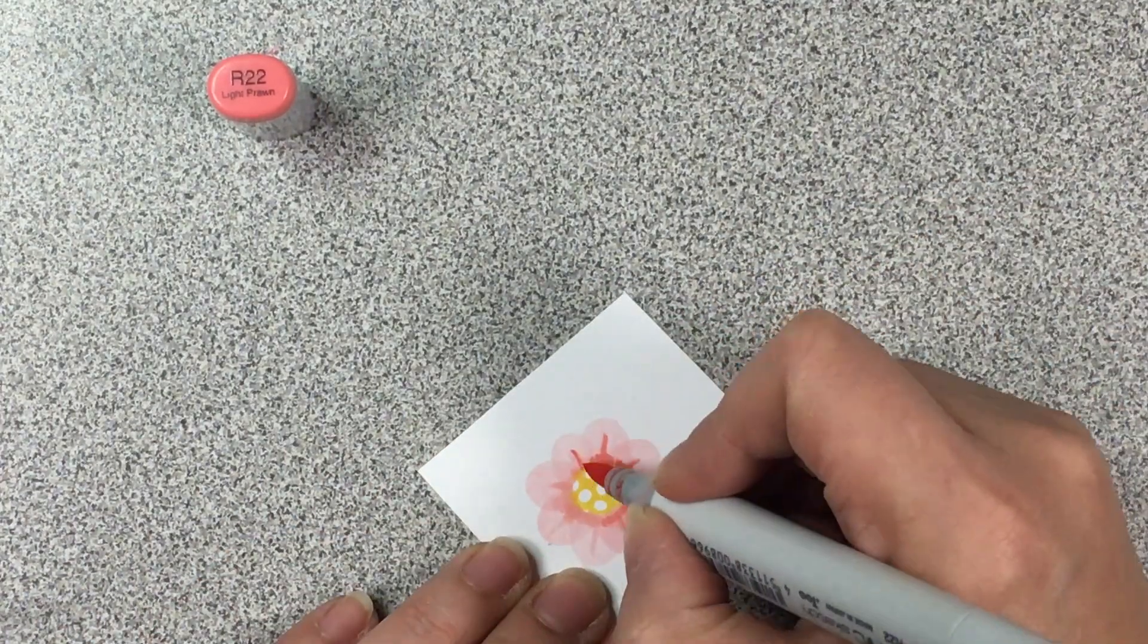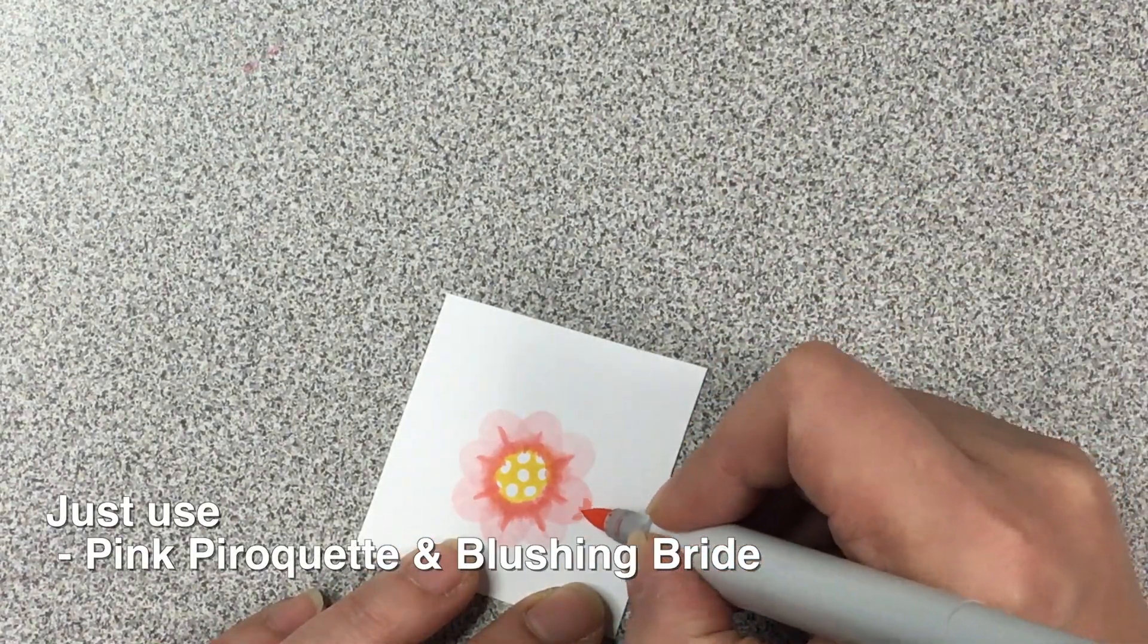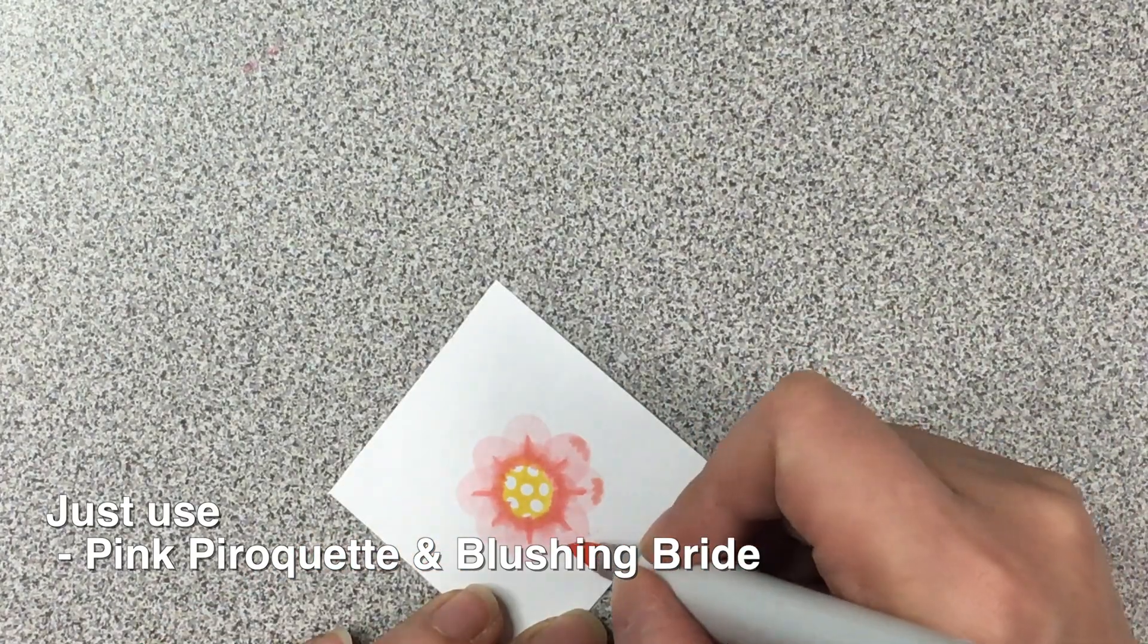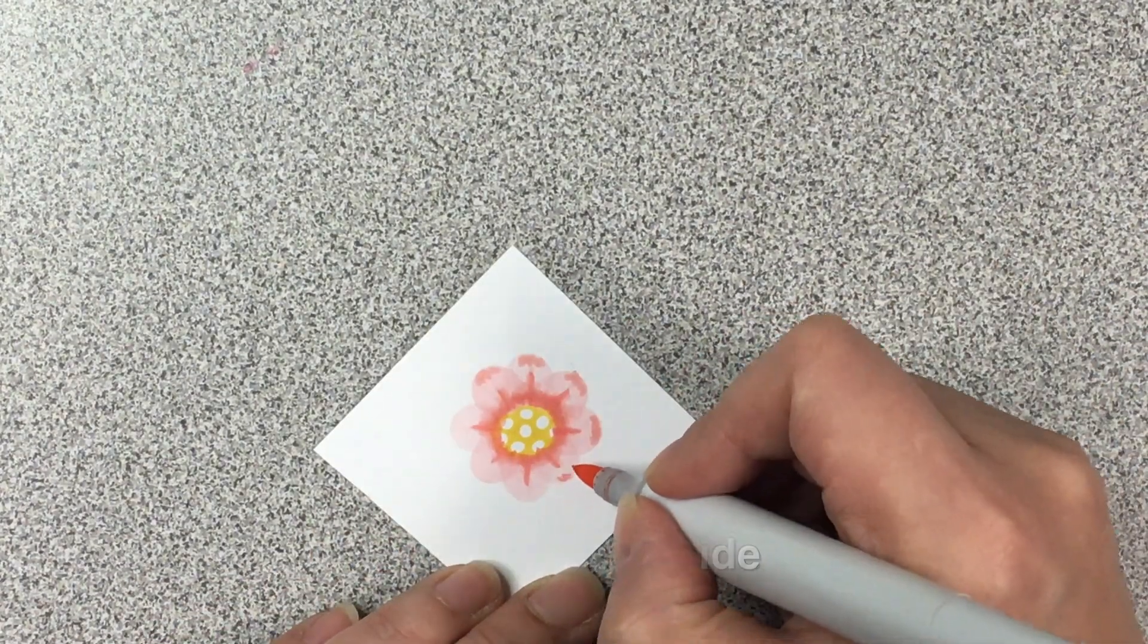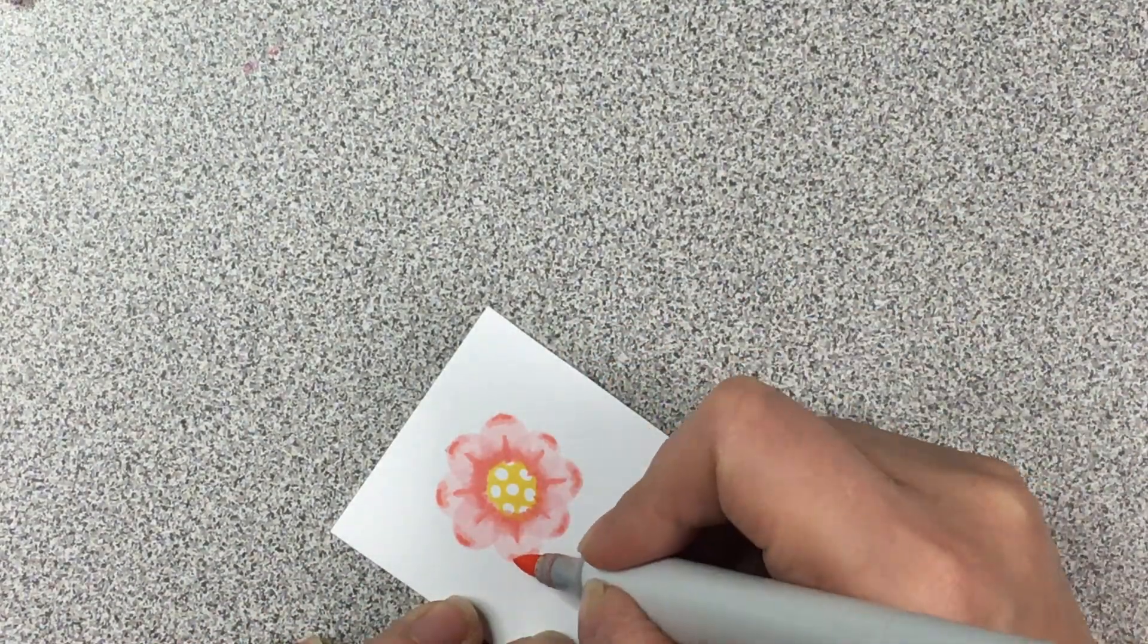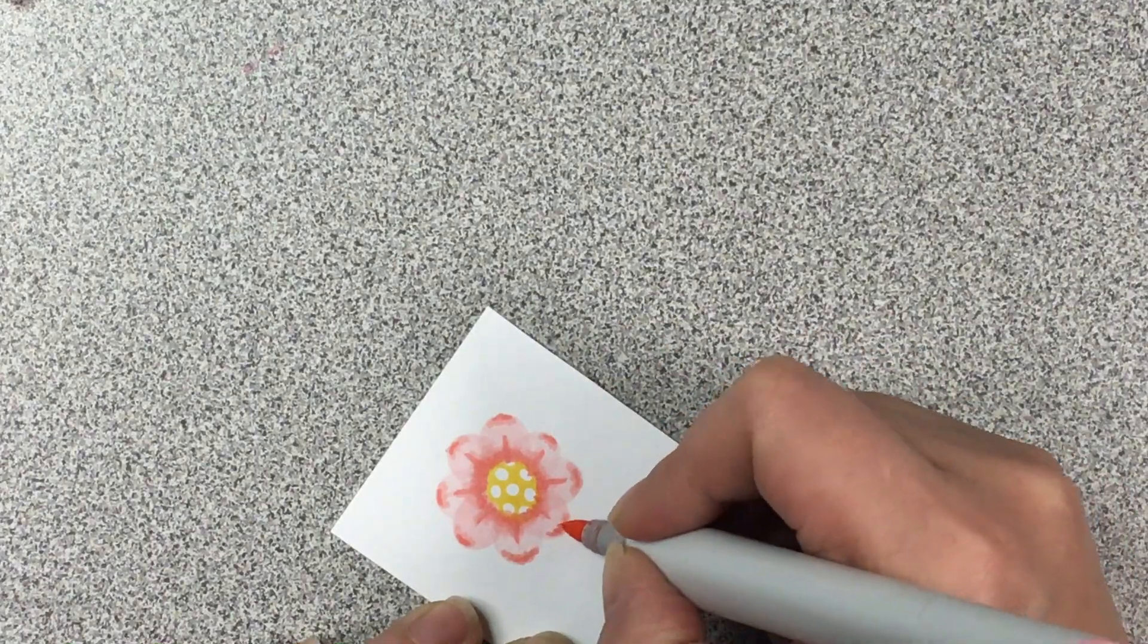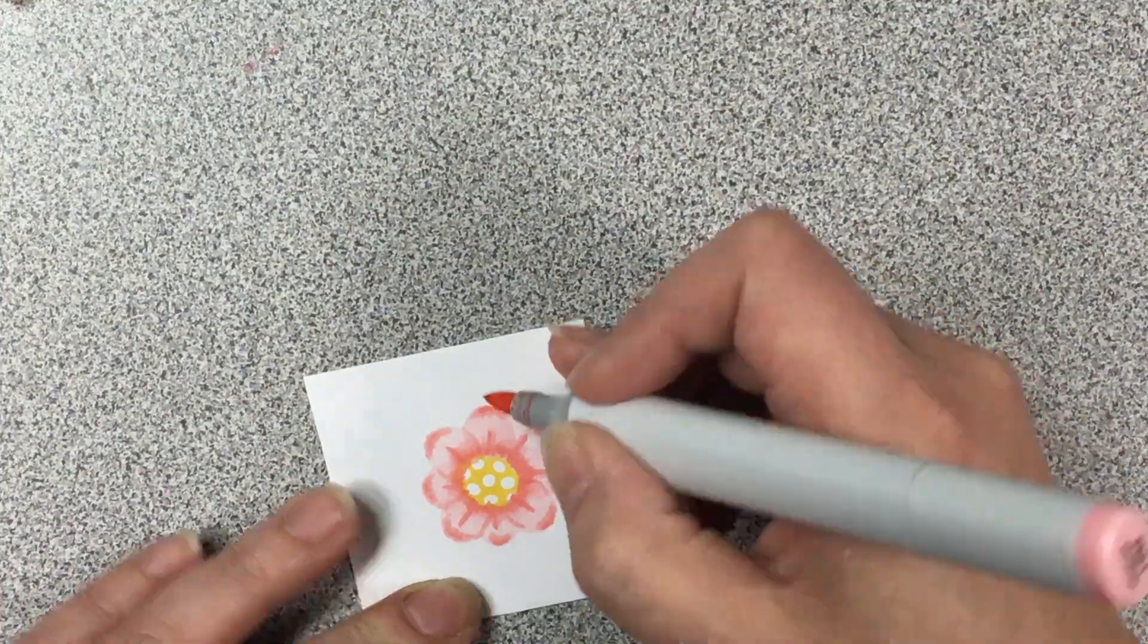I believe I would use the Pink Pirouette along with the Blushing Bride and maybe a hint of Sweet Sugar Plum if you really needed it. I'm just coloring along around the center part of the flower here and then creating some definition on the tips.